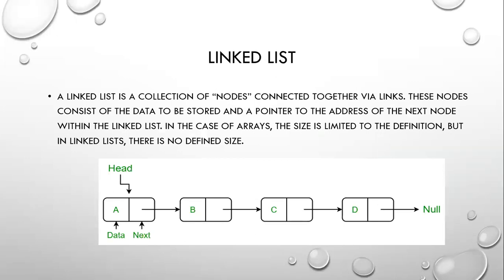Linked List. A linked list is a collection of nodes connected together via links. These nodes consist of data to be stored and the pointer or address of the next node. Linked list consists of a collection of nodes — this is node one, this is the second node, third node, fourth node. Each node is divided into two parts: data items and address of the next node. Initially the first data item is stored — here the data item is A — then we store the address of the next node, through which we can connect to the next node. The last node contains the address as null, and the head node contains the address of the first element.